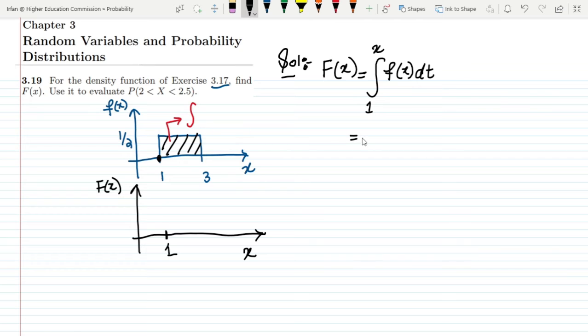So now let me use these values and writing these values here what I will get here I will get as the value of it is 1/2. So this 1/2 will be here and I will take this 1 x and dt.